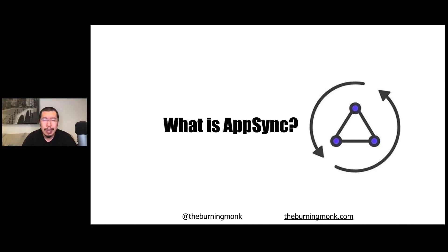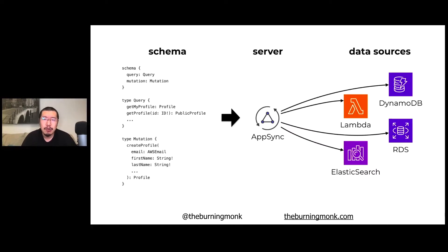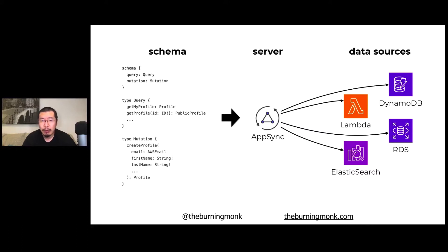AppSync is basically a fully managed GraphQL server, which allows you to map queries and mutation operations as well as data types to different resources in your AWS account. Out of the box it supports DynamoDB, Lambda, Aurora Serverless, Elasticsearch, as well as any raw HTTP endpoint, which you can use to integrate with a number of different AWS services as well as any internal services still running REST.